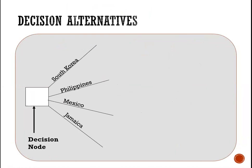To start the problem, we start with the decision node. We have our square representing our decision node, showing that a decision needs to be made. The branches from the decision node show the decision alternatives, so we are going to be choosing between South Korea, Philippines, Mexico, and Jamaica.